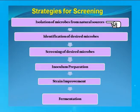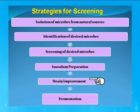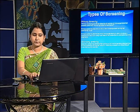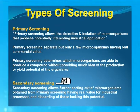The strategies for screening are: number one, isolation of microbes from natural sources; then identification of the desired microbes; then screening of the desired microbes; then inoculum preparation; strain improvement; and finally fermentation. Screening is of two types — primary screening and secondary screening. Primary screening is the process of isolation and detection of a microbe from any natural source having the desired trait. Secondary screening is further sorting of microbes obtained through primary screening having real value for industrial microbiology.